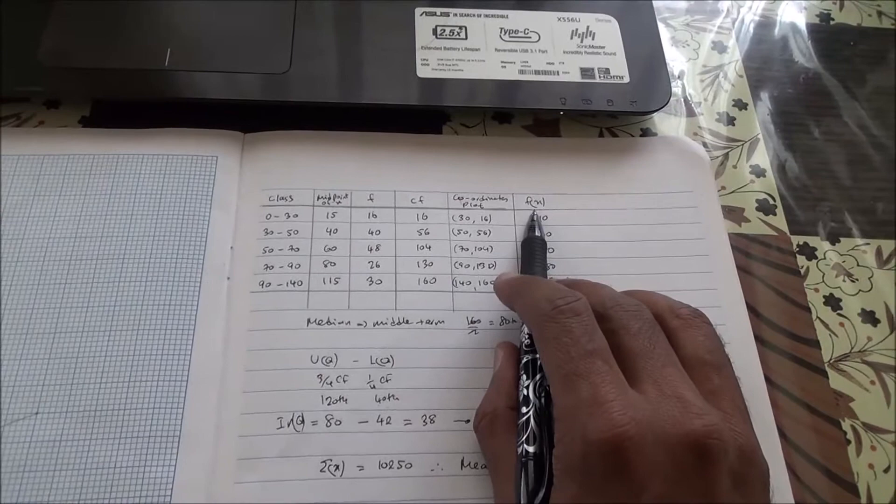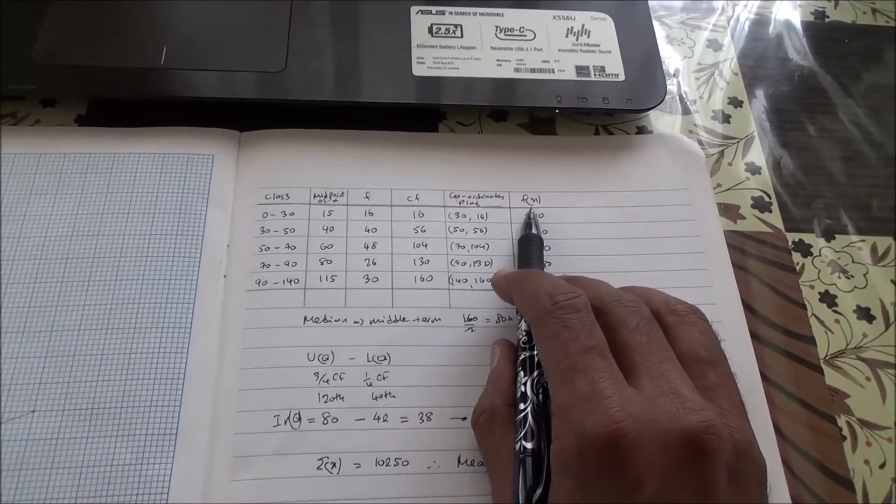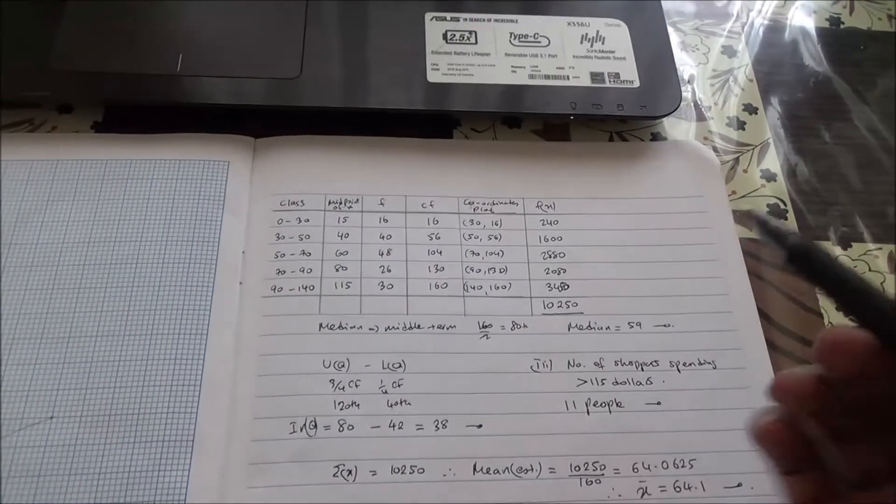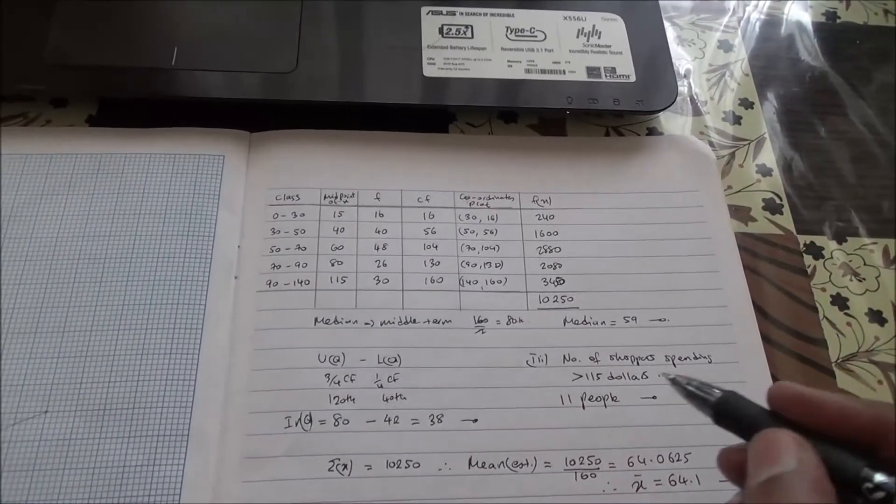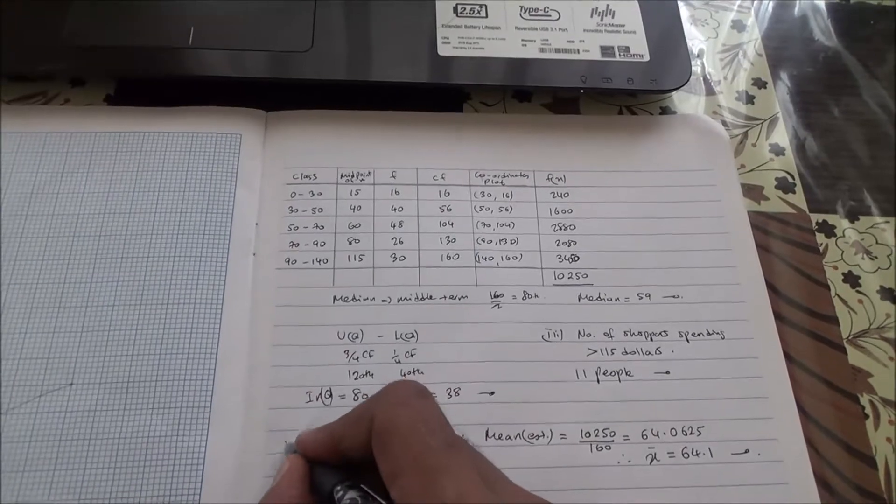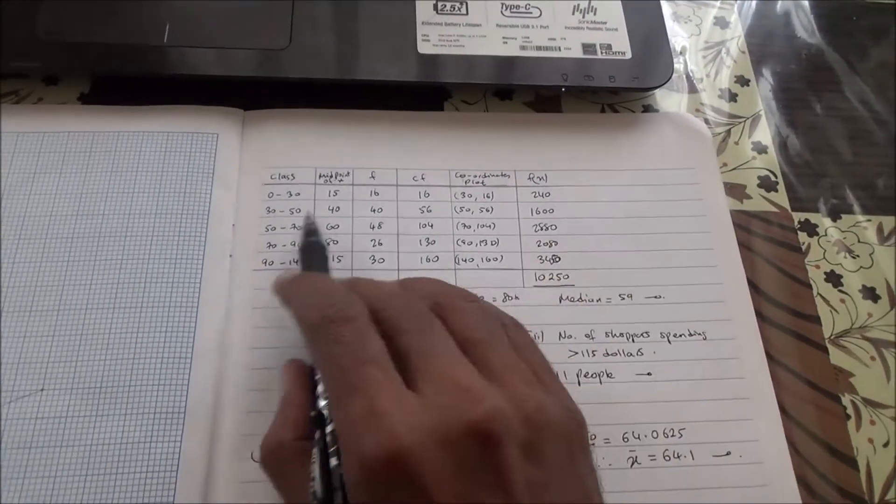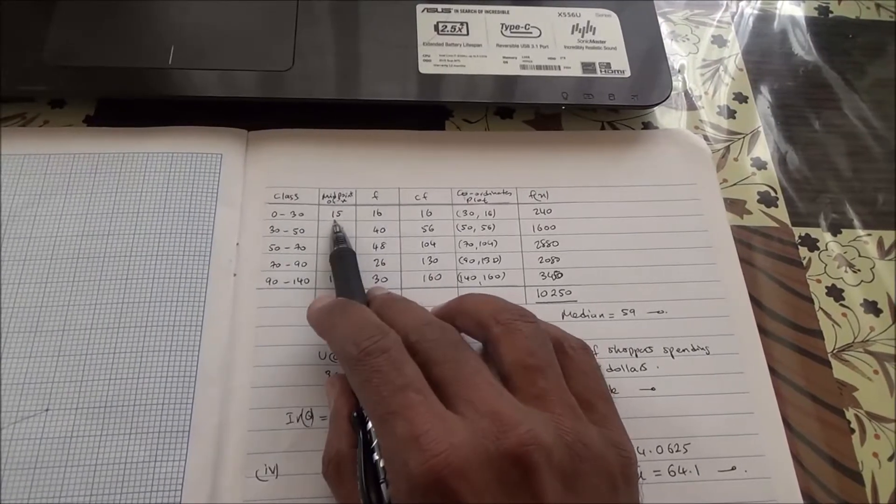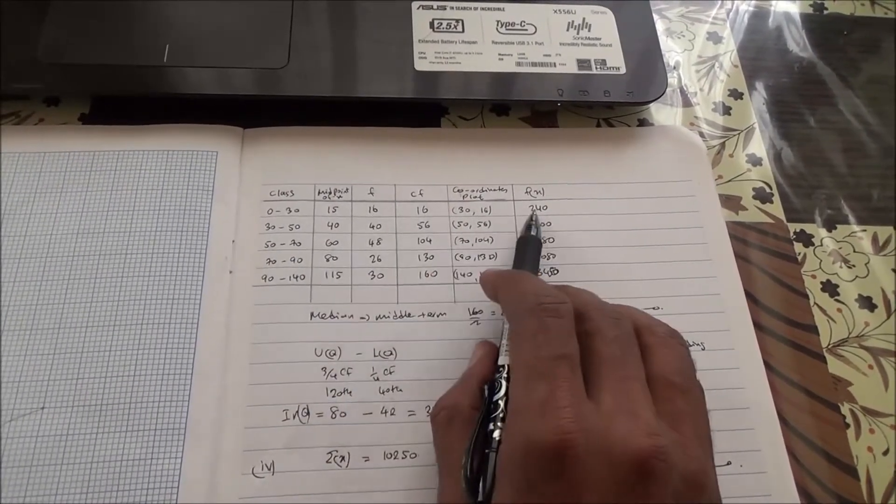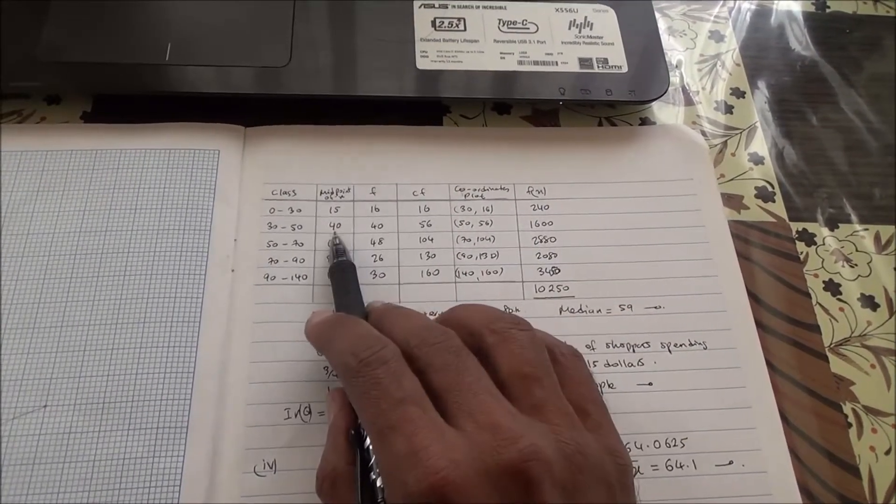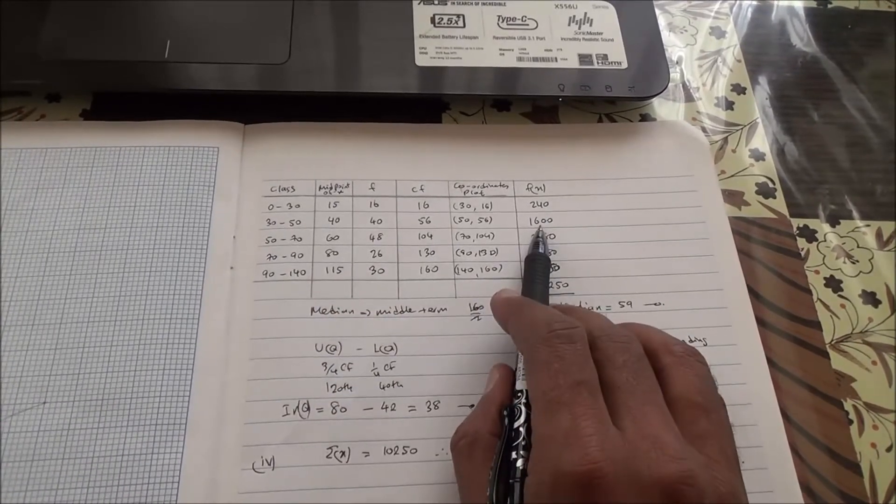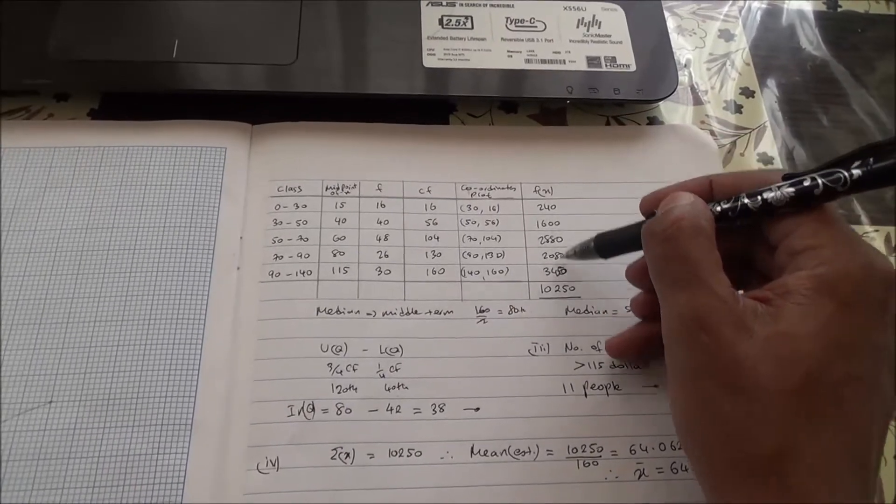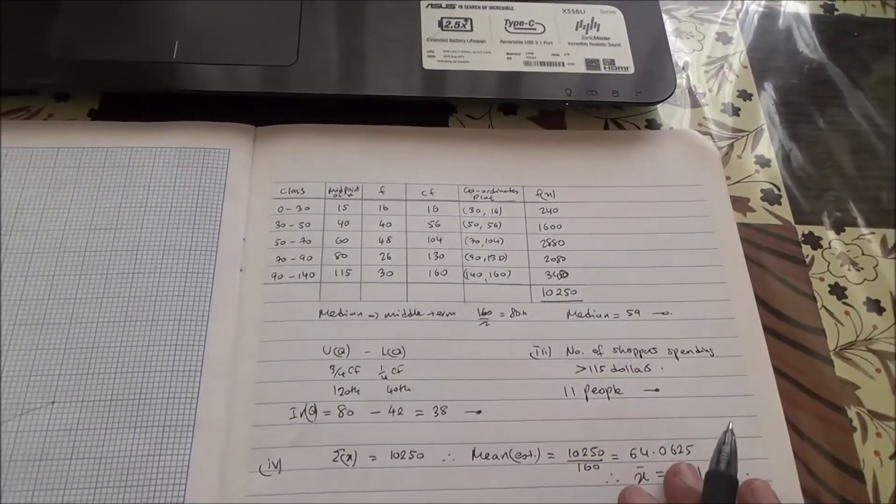I've constructed another table called fx in order to be able to find the mean. Because in the question for the last part, we need to find the mean. This is the fourth part of the question. The fx table is quite easy. So f multiplied by x: 15 times 16 is going to be 240, 40 times 40 is 1,600, 60 times 48 is going to give you all of that. The sum of all of this is going to be the summation of fx.